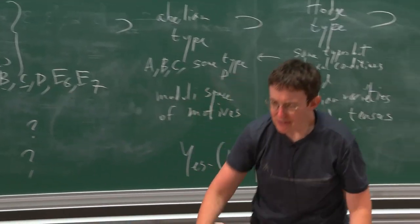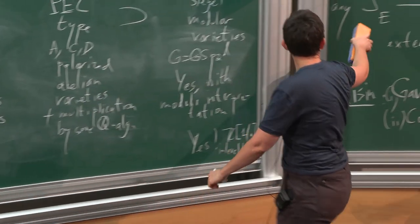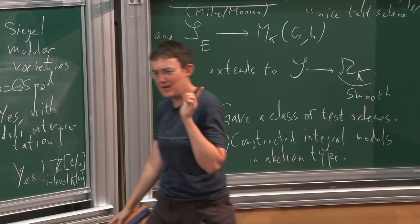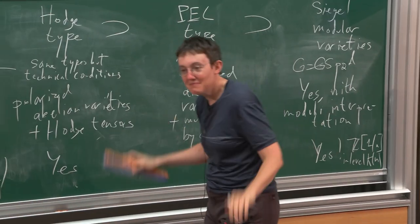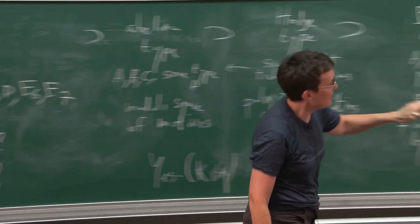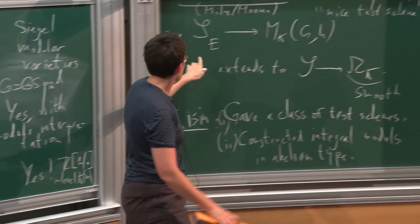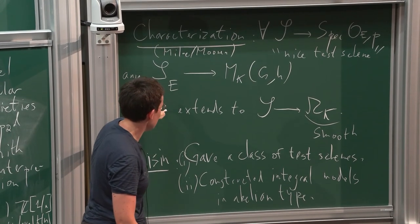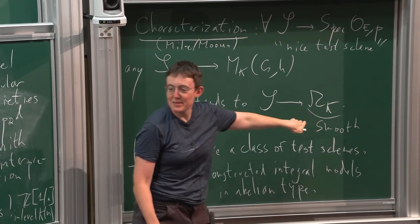The correct condition on S is: regular, formally smooth. That will give uniqueness because that means you can use the integral model itself as a test scheme — if you have two integral models, the identity of the generic fiber will extend in both directions.